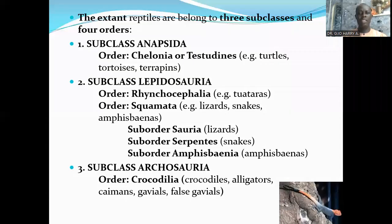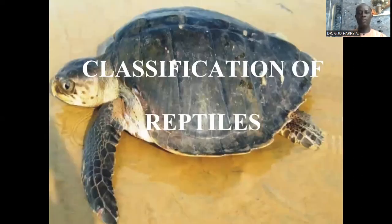Hello, you are welcome to our lecture on chordates. Today's lecture is on the class Reptilia — the reptiles — and we're going to look at the classification of reptiles. Earlier we had discussed that reptiles are tetrapod vertebrates that are amniotes, neither birds nor mammals, characterized by the possession of scales, some have scutes, some have shells like the tortoise, they have five-digit toes, and they are poikilothermic — cold-blooded organisms. Today's lecture will be on the classification of these reptiles.